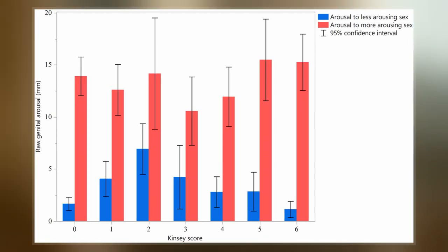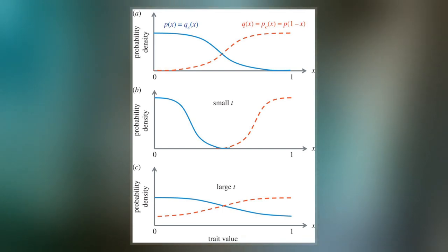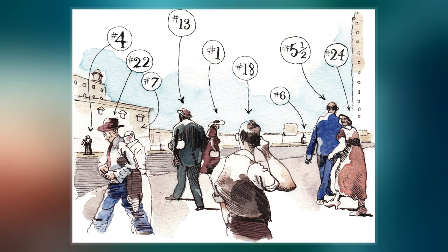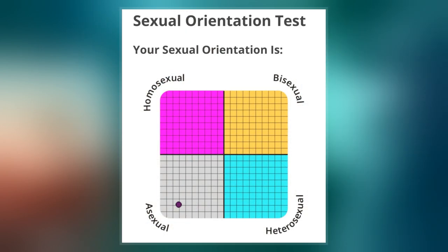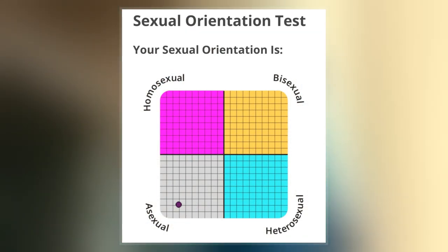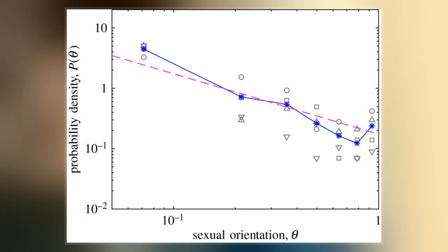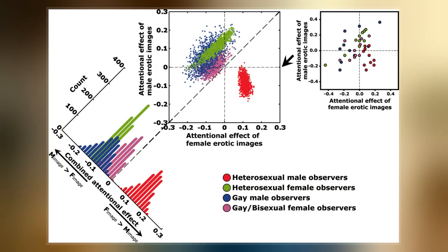Alfred Kinsey, the creator of the Kinsey Scale, is known as the father of the sexual revolution. The Kinsey Scale was created in order to demonstrate that sexuality does not fit into two strict categories, homosexual and heterosexual. Instead, Kinsey believed that sexuality is fluid and subject to change over time. Instead of using sociocultural labels, Kinsey primarily used assessments of behavior in order to rate individuals on the scale.